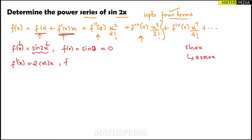Substituting x = 0 into f'(x) = 2cos(2x): f'(0) = 2·cos(0) = 2·1 = 2.